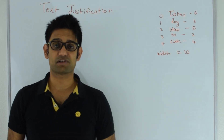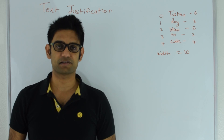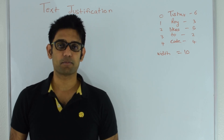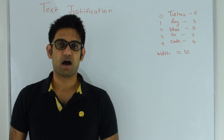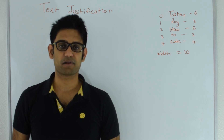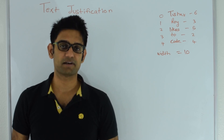Hello friends, my name is Tushar and today I'm going to discuss the question text justification. Given a list of words and a limit or number of characters you can print on every line, how do you arrange these words over multiple lines such that the number of empty spaces is evenly distributed?